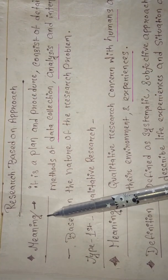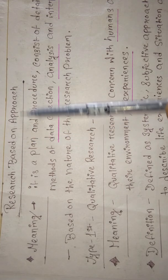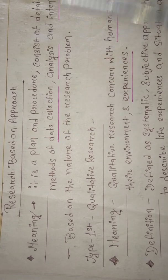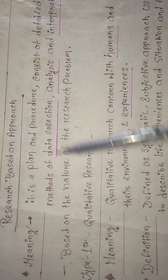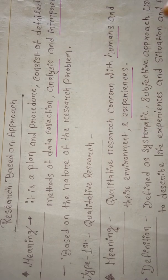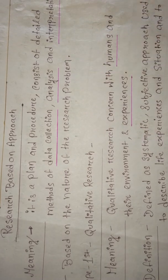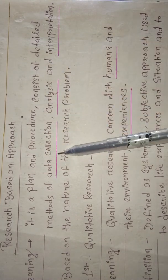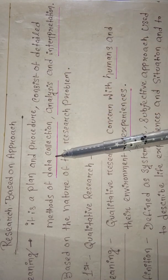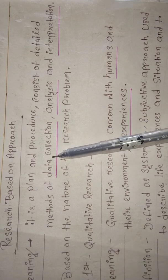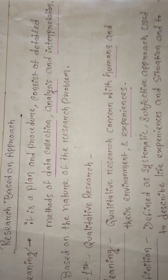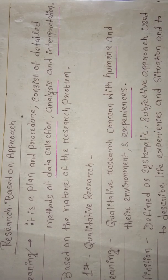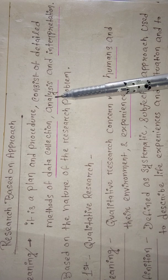What is the meaning of 'based on approach'? It is a plan and procedure consisting of detailed methods of data collection, analysis, and interpretation, mainly focusing on data collection. We will collect the data - data means information - we will collect the information and we will analyze it.